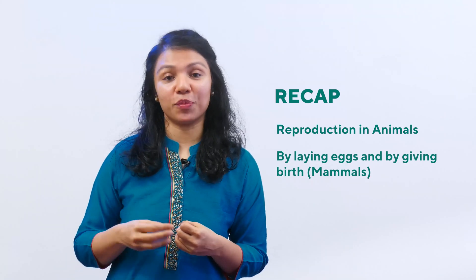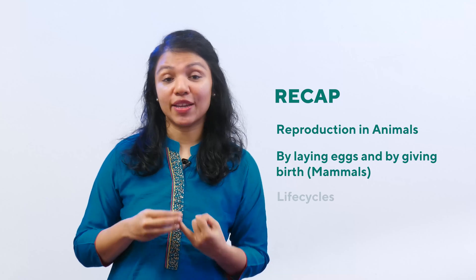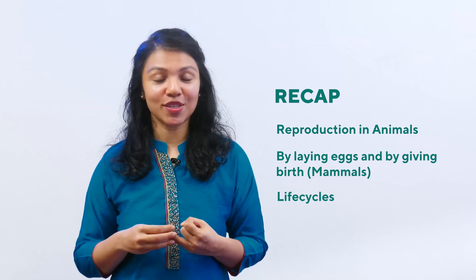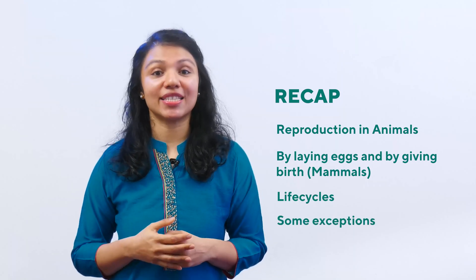We've come to the end of this unit. You can find this unit on pages 98 to 105 in your textbook. In this unit we learned about reproduction — reproduction by laying eggs and by giving birth. We also learned about the life cycles of different animals and looked at some exceptions. Read up more about these topics, and happy learning. See you soon!